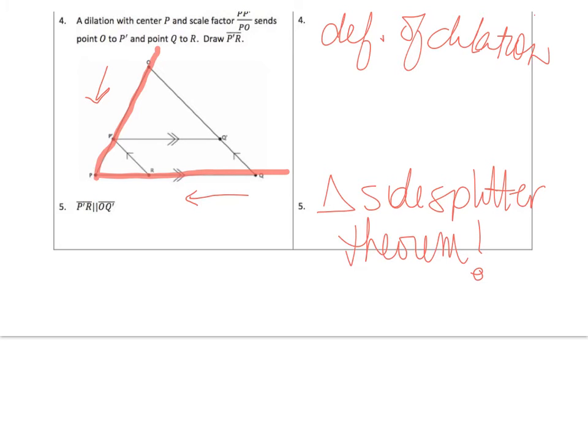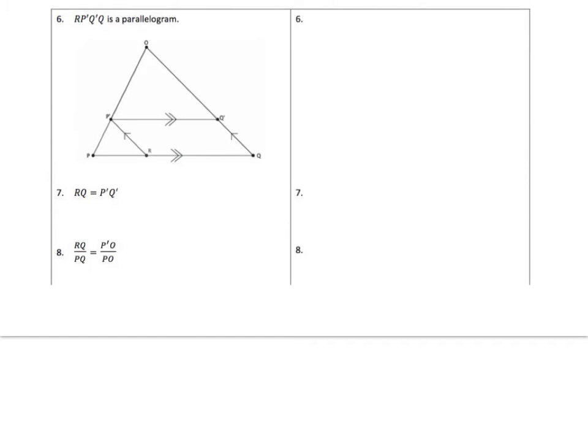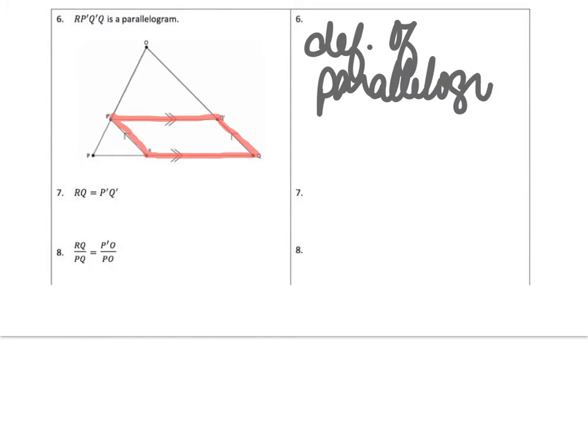The next part, now those segments are parallel because of our triangle side splitter theorem. Now the next thing we're going to do is look at this piece right there. What does that look like? I've got parallel sides and parallel sides. I think I have a parallelogram. Hey, look. Our P prime, Q prime, Q is a parallelogram. And my reason here is definition of parallelogram.